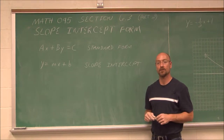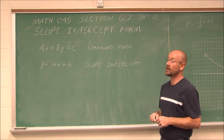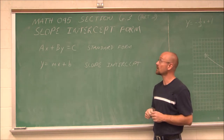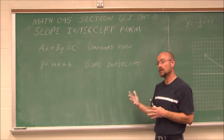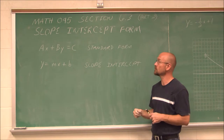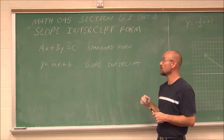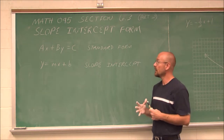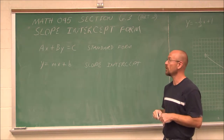Hello and welcome to Bay College's video lectures for Math 095, Basic Algebra. We're continuing our discussion on section 6.3, part 2 of slope-intercept form. In 6.2 we introduced intercepts, and in the first part of 6.3 we talked about slope. Now we're going to merge the two together and talk about slope-intercept form of an equation.